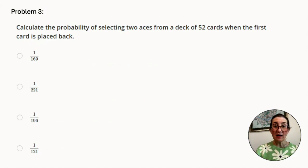Problem number 3. Calculate the probability of selecting 2 aces from a deck of 52 cards when the first card is placed back. Our answer options are 1 over 169, 1 over 221, 1 over 196, or 1 over 121. The first time we choose a card from a standard deck of 52 cards, the probability of choosing an ace is 4 over 52, as there are 4 aces in the deck of cards. In the question, it tells us that the first selection is placed back in the deck. So the probability of choosing 1 ace is again 4 out of 52.